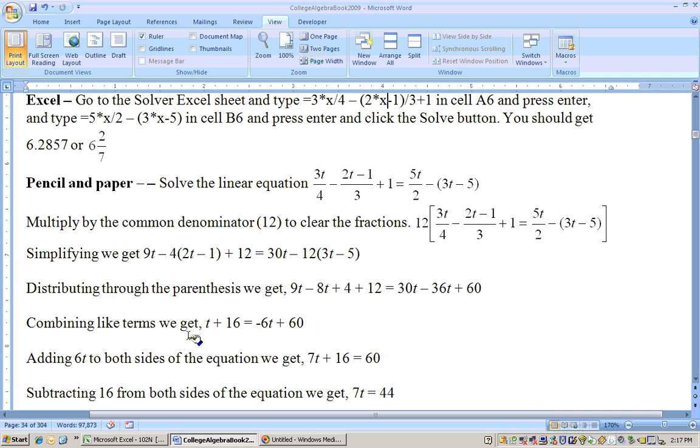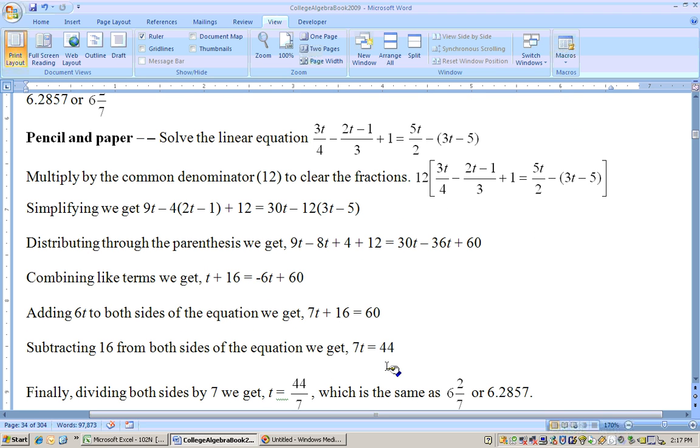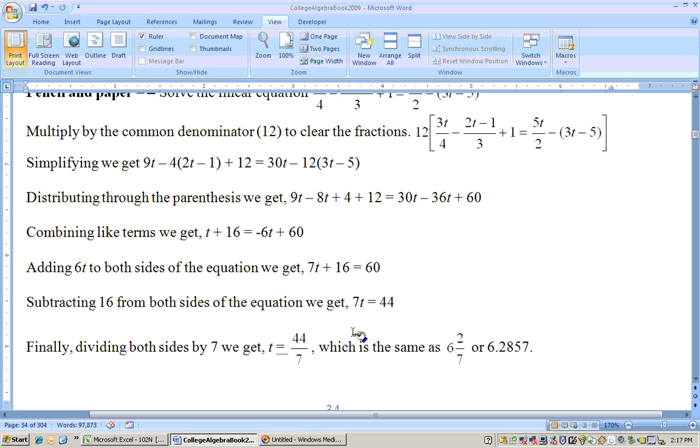I'll get all your t's on one side. I added 6t to both sides to get 7t. Then I subtracted 16 from both sides to get 44. Finally, divide through by the 7 on both sides to get the same answer we had. So that's how you solve linear equations.